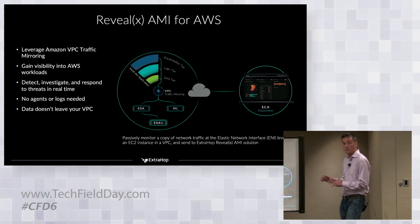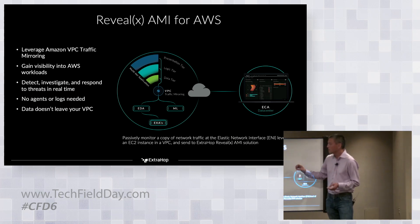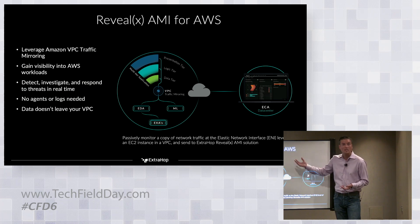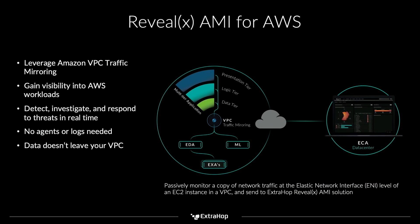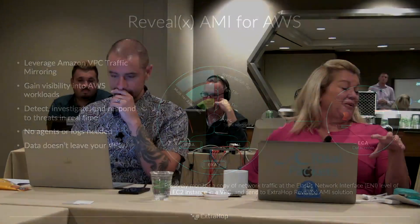Q: Do you get pushback from customers who don't want their data to leave? A: Yes — great segue to the RevealX AMI solution. This is essentially the same product as RevealX Cloud, except the traffic mirroring sessions point to an Amazon Machine Image inside the customer's VPC, so data does not leave the VPC. It eliminates privacy concerns and egress charges, but it's not a SaaS model — the customer is responsible for deployment and management of the VM running ExtraHop. The customers who don't want payload exiting are usually large financial institutions and they don't care about the cost difference.